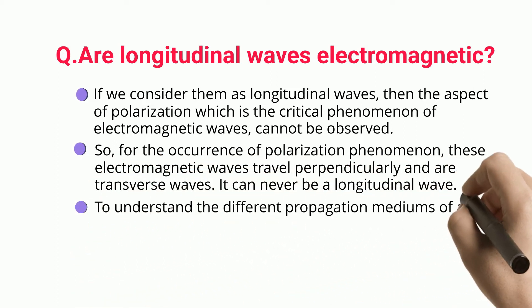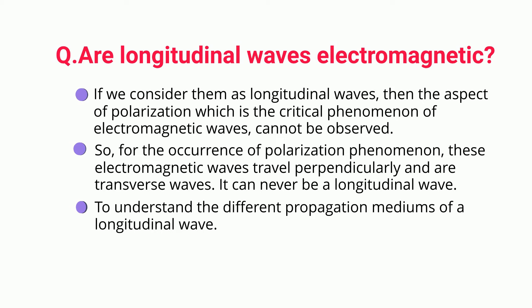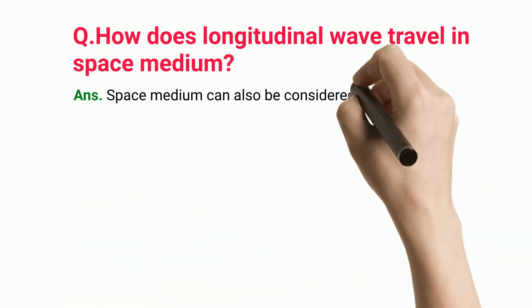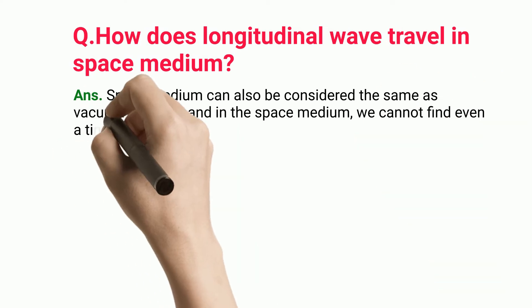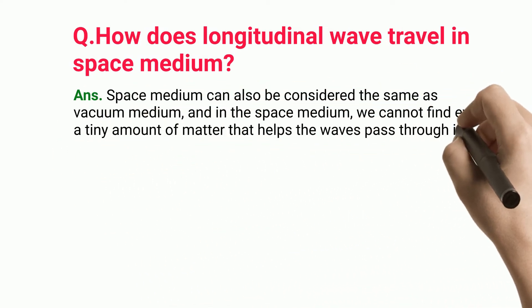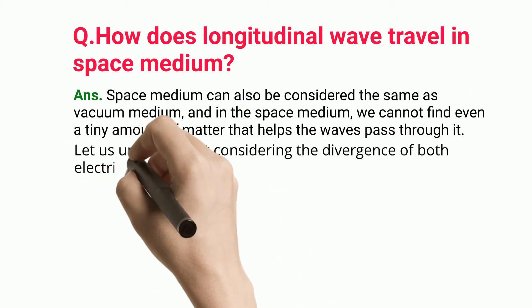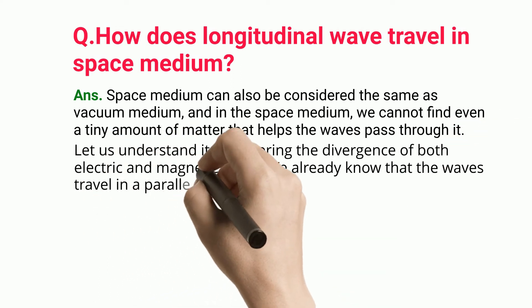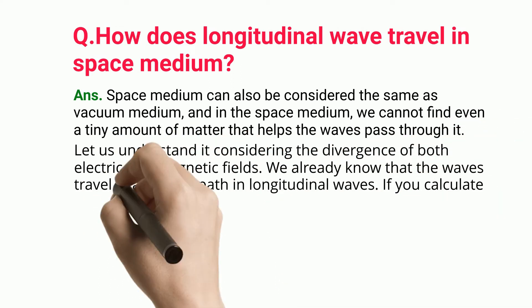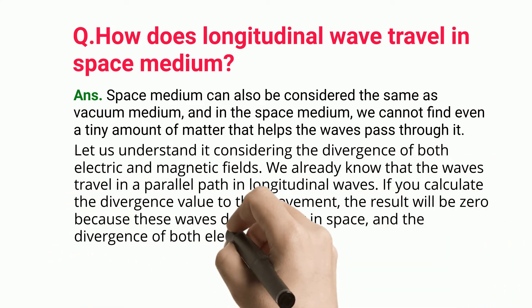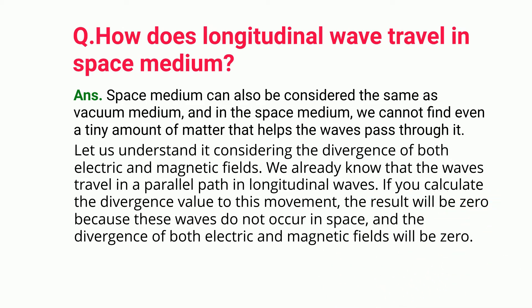To understand the different propagation mediums of a longitudinal wave: how does a longitudinal wave travel in space medium? Space medium can also be considered the same as vacuum medium, and in the space medium, we cannot find even a tiny amount of matter that helps the waves pass through it. Let us understand it by considering the divergence of both electric and magnetic fields. We already know that waves travel in a parallel path in longitudinal waves. If you calculate the divergence value for this movement, the result will be zero because these waves do not occur in space, and the divergence of both electric and magnetic fields will be zero.